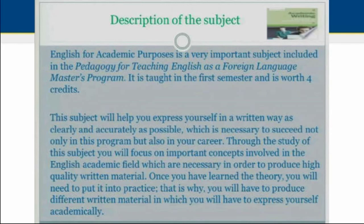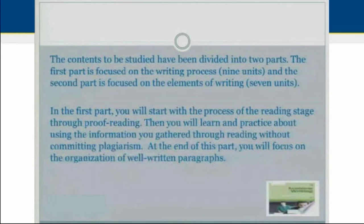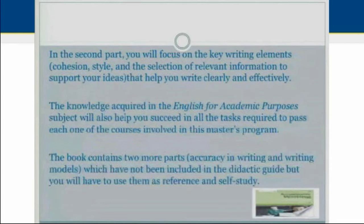The contents to be studied have been divided into two parts. The first part is focused on the writing process, which involves the study of nine units, and the second part is focused on the elements of writing, which involves seven units. In the first part you will start with the process of the reading stage through proofreading, then learn about gathering information through reading without committing plagiarism, and finally focus on the organization of well-written paragraphs. In the second part you will focus on key writing elements such as cohesion, style, and the selection of relevant information to support your ideas.